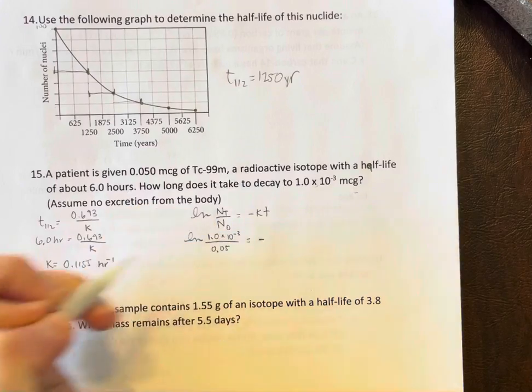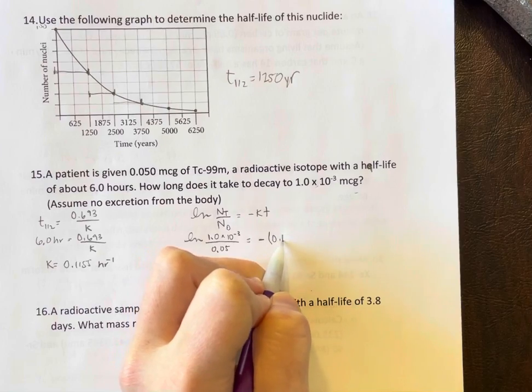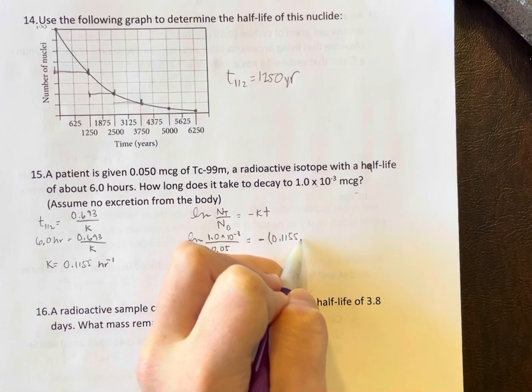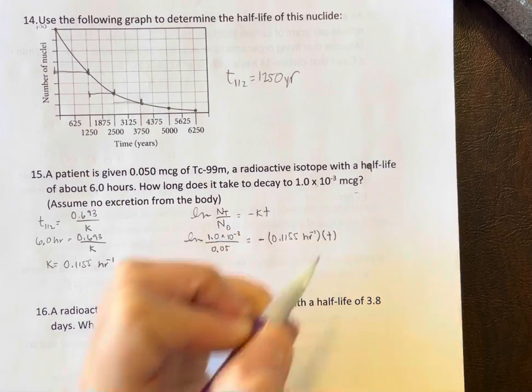Equals negative k, which is 0.1155, and then inverse hours times t.